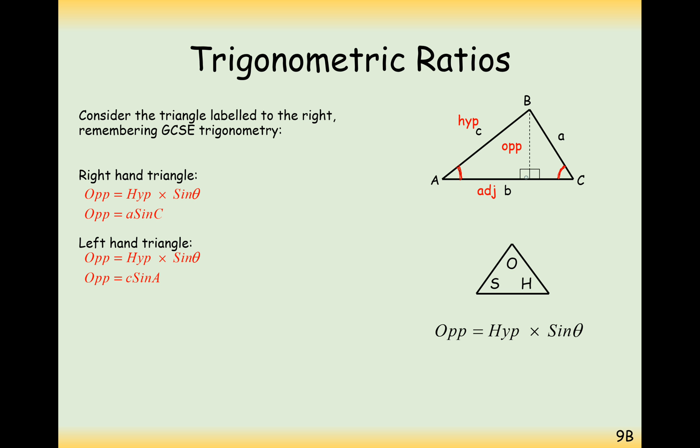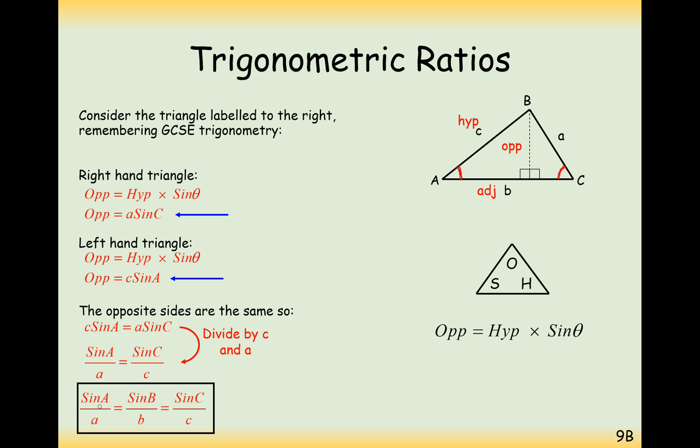So given that the perpendicular height was A sine C beforehand and now it's C sine A, what we can do is set those two equations equal to each other. And then what we'll do is we'll move C's on both sides and A's on both sides to create a formula that looks like this: sine A over A equals sine C over C. We could have alternatively labelled them B as well. So really it looks like this, sine A over A equals sine B over B equals sine C over C. The formula actually works upside down as well because if we were to divide through by sines instead of the small letters, we'd get this formula here. So the formula can be switched around upside down.